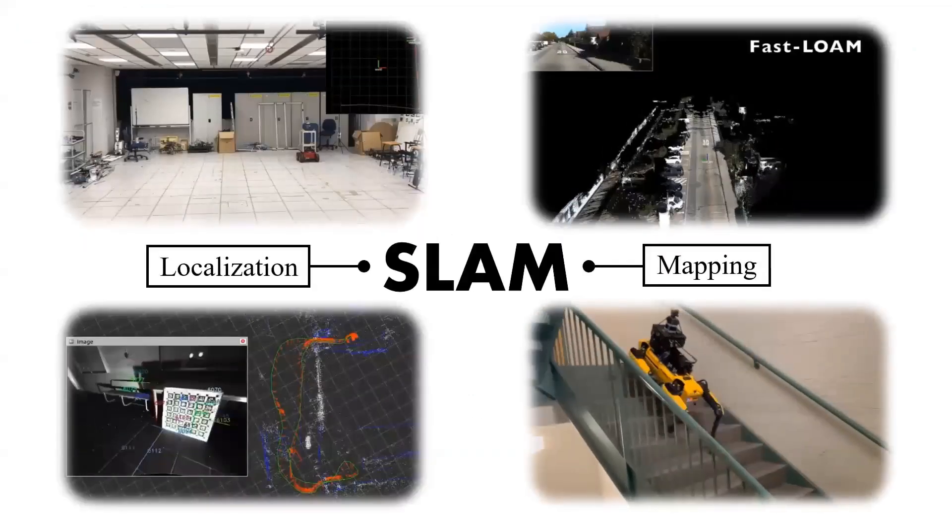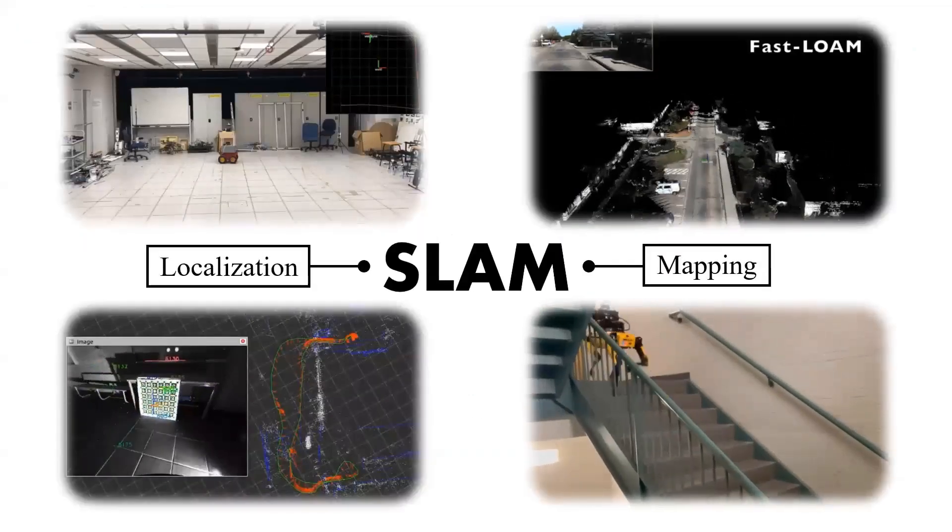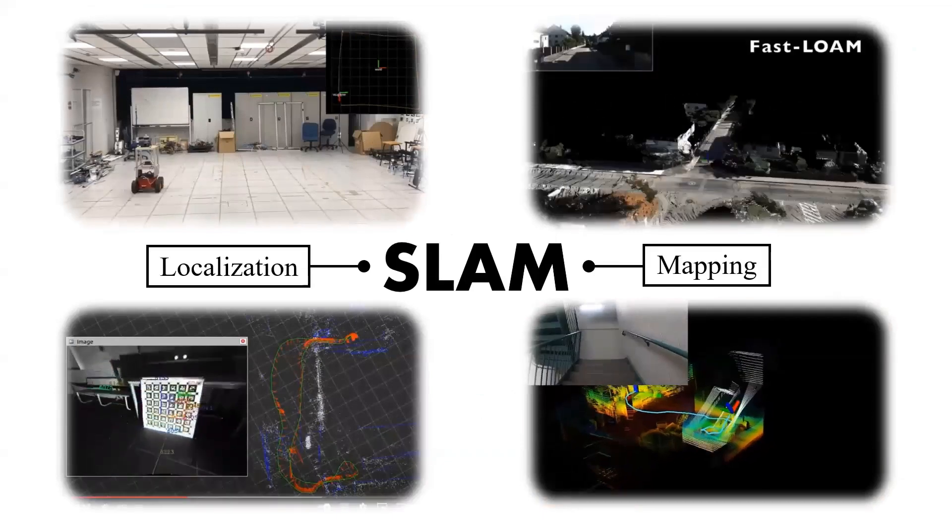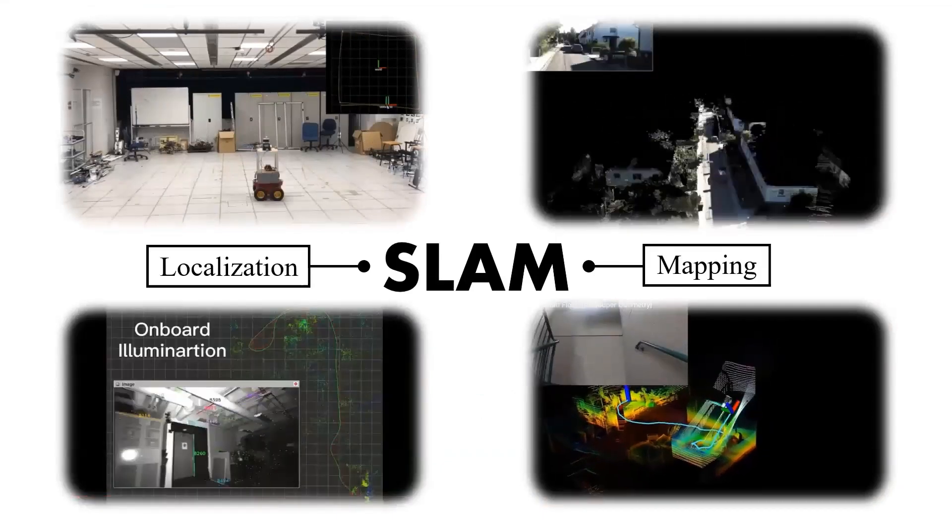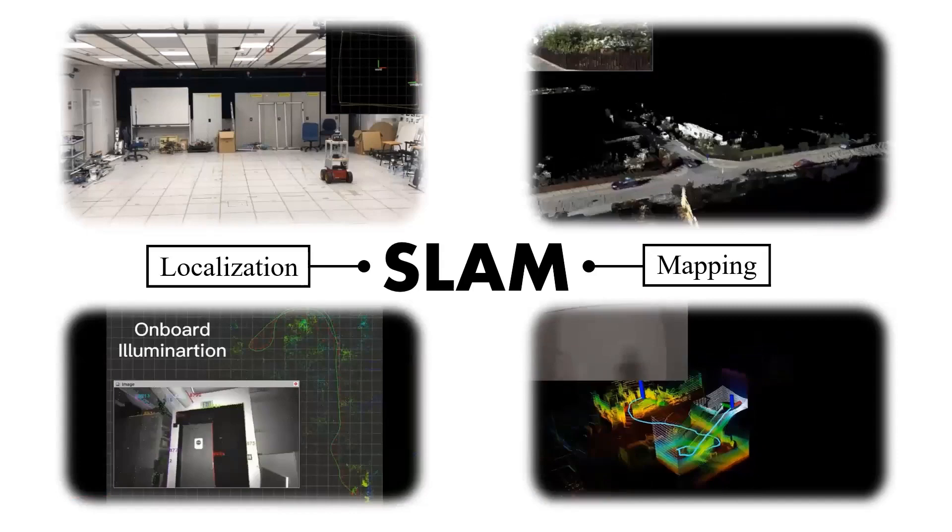Simultaneous localization and mapping is the task of tracking the trajectory of a robot as it moves through space while simultaneously building a map of the environment.